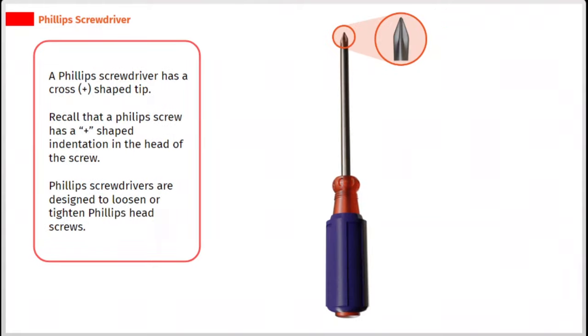A phillips screwdriver has a cross, or plus, shaped tip. Recall that a phillips screw has a plus shaped indentation in the head of the screw. Phillips screwdrivers are designed to loosen or tighten phillips head screws.